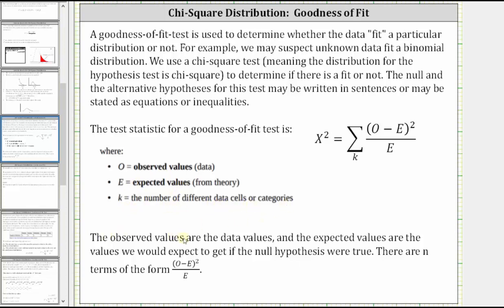The observed values are the data values, and the expected values are the values we would expect to get if the null hypothesis were true. There are N terms in the form of the square of O minus E divided by E.